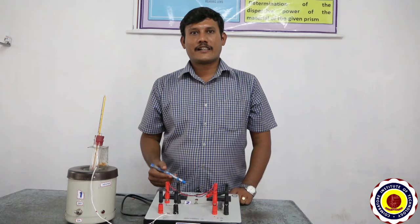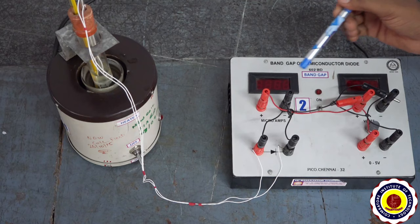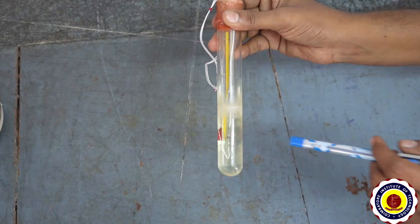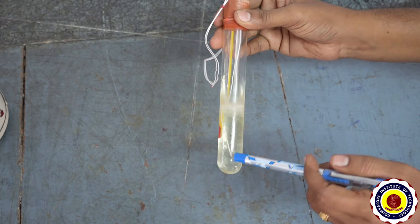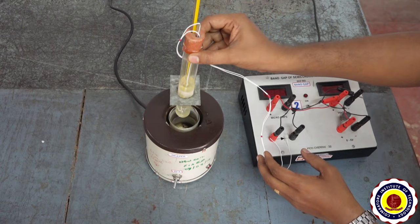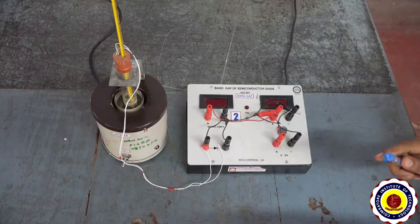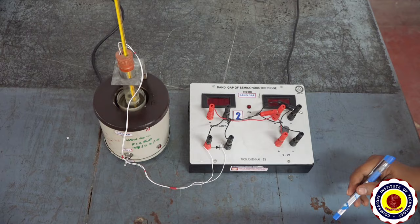Let us see the demonstration of the experiment. Here you can see the experimental setup to determine the band gap of a given semiconductor. This is a ready-made experiment, so no need to connect any wires — the wires are already connected. The semiconductor diode and thermometer are both immersed in an oil-containing glass tube, which is immersed in a water bath that is heated. The diode is connected in a reverse bias configuration, and we are going to measure the reverse saturation current of the diode for different temperatures.